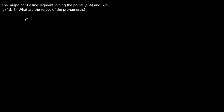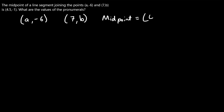So we've got (a, -6) as our first coordinate, and we've also got (7, b) as our second coordinate, and the midpoint is (4.5, -1).